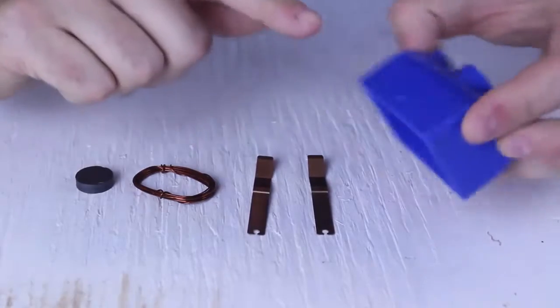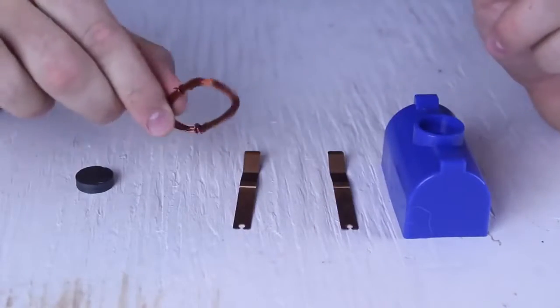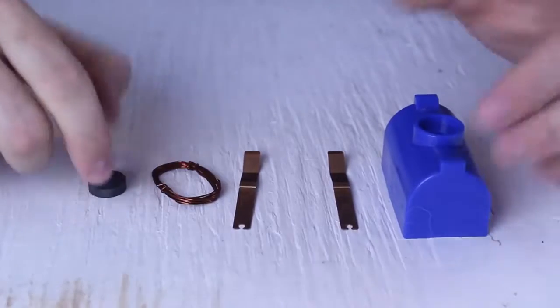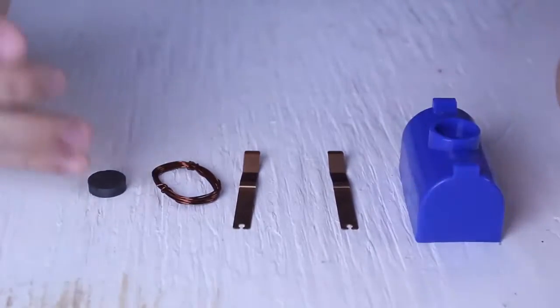Here is what's included in this little science kit: plastic metal base, two copper rods, copper wire, and a little magnet. And of course the sucky part is not included, the battery.